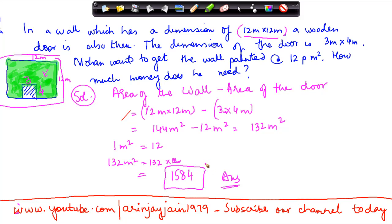Just to reiterate, if I have to get the area painted excluding the area covered by the door, then I need to know the area of the portion which has to be painted. The total area of the wall is 12 by 12 meter, and the area of the door is 3 by 4 meter. So the area of the portion which has to be painted is 12 by 12 minus 3 by 4, which gives me 132 meter square.